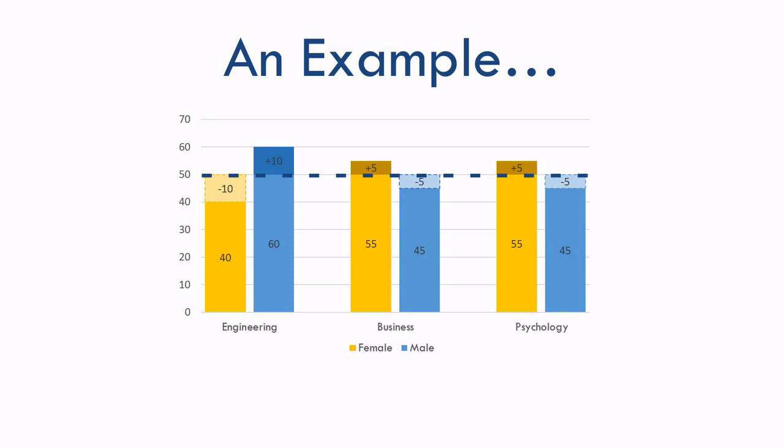If we quantify this, we see engineering's off by 10 for both men and women, while business and psychology are both off by 5. These differences from the expected value are highlighted here. Remember, the purpose of the chi-square is to tell us if these deviations from what we would expect are big enough to be reliable differences. That is, if we collected new data, would we expect to see the same deviations from the expected value? Or is this just a coincidence? That's what a chi-square tells us.